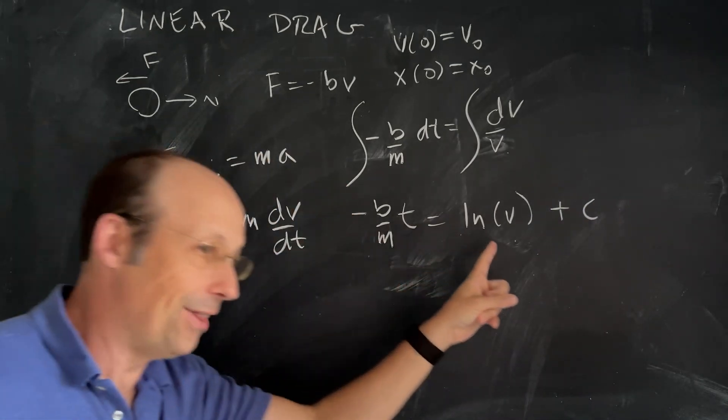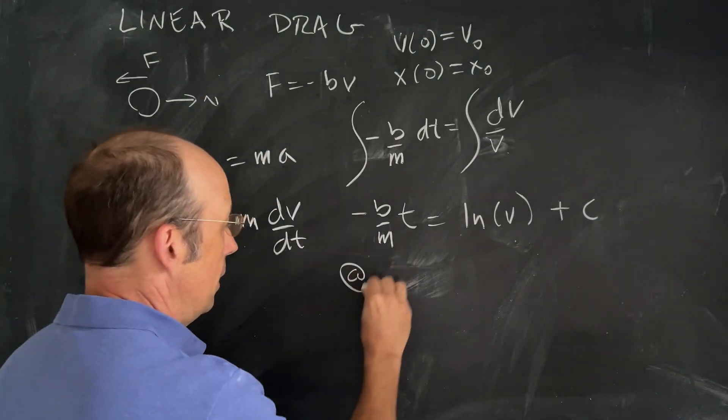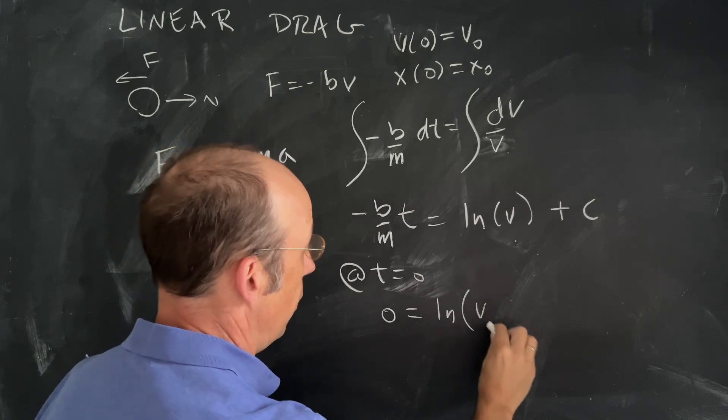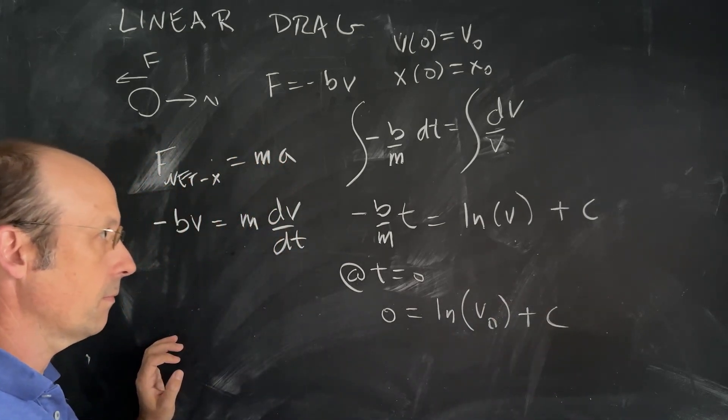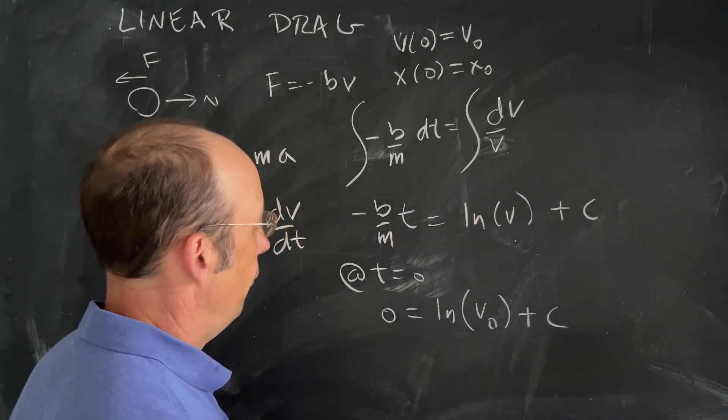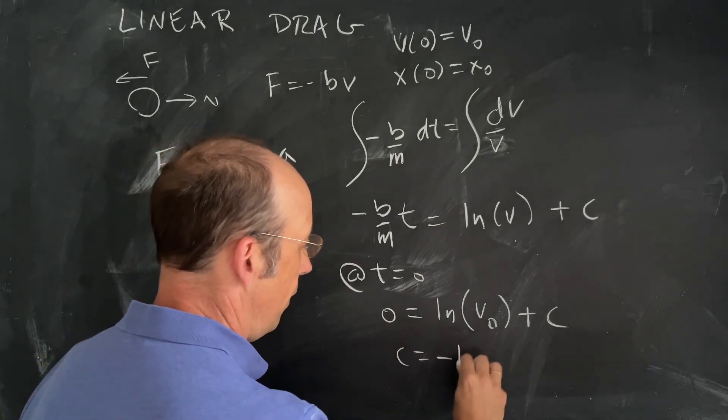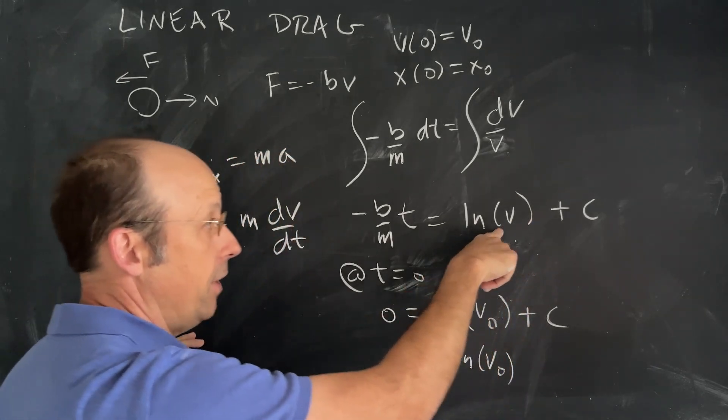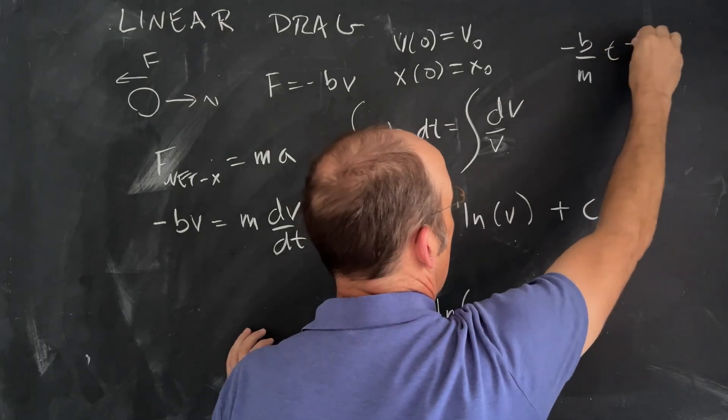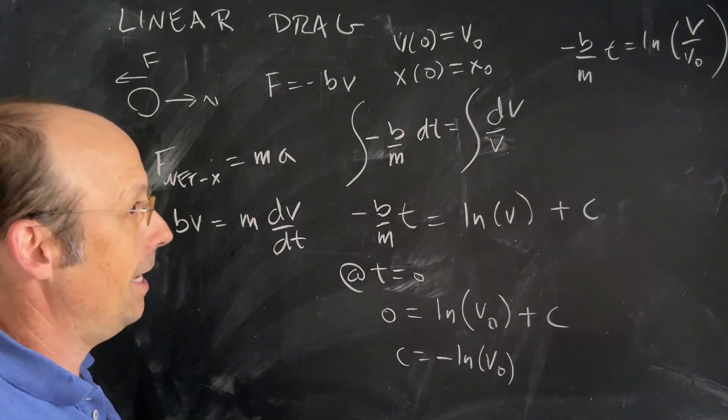You can't take the natural log of velocity, but it's fine. Let's apply our initial conditions. At t equals zero, I get zero equals the natural log of v₀ plus c. So c is negative ln of v₀. If I put that in, I have ln of v minus ln of v₀. This is the same as saying negative b over mt equals ln of v divided by v₀. That makes me happier because I can take the natural log of a unitless quantity.